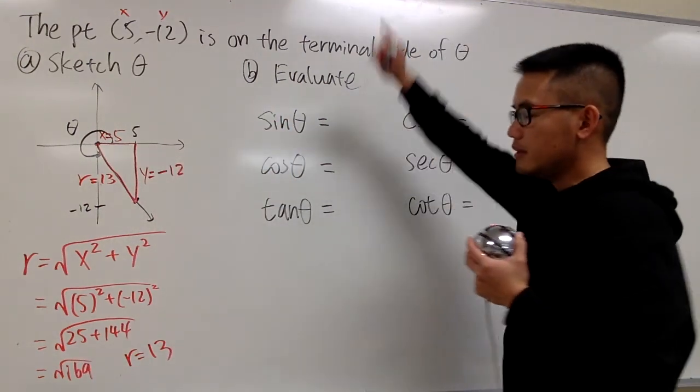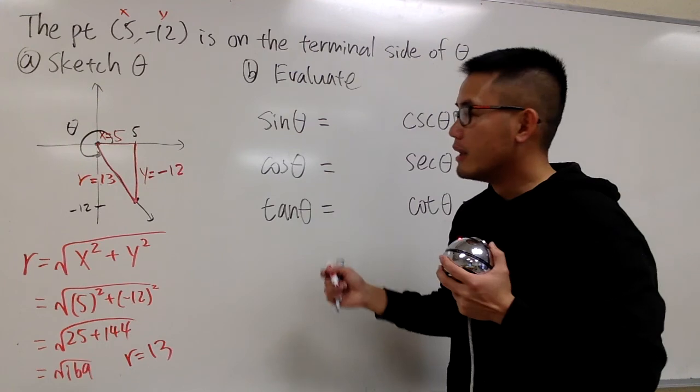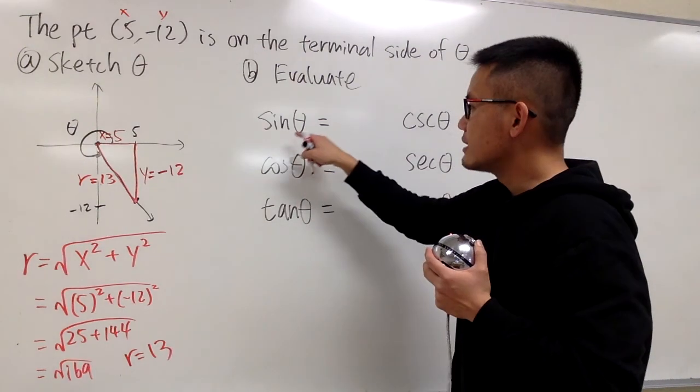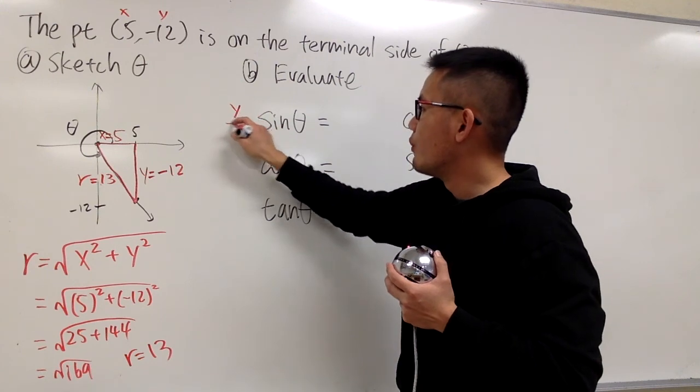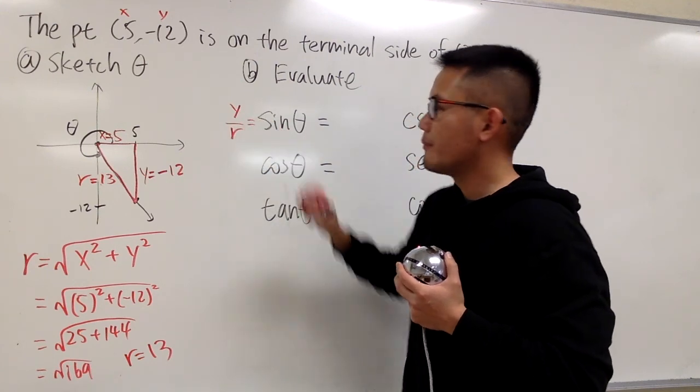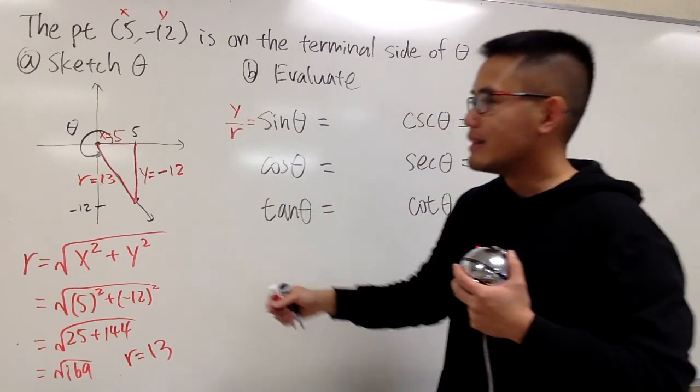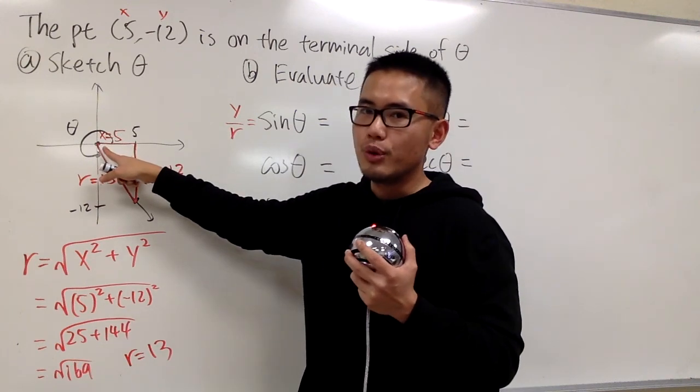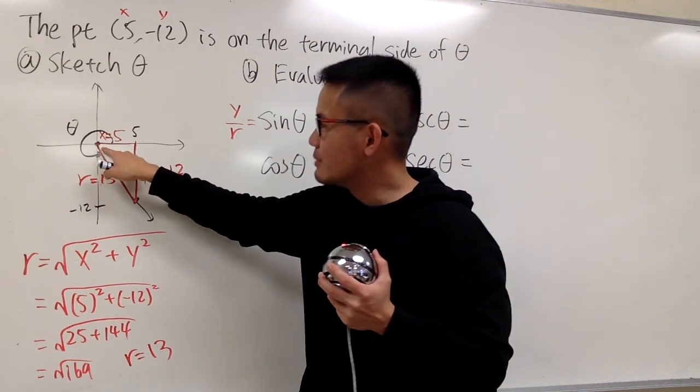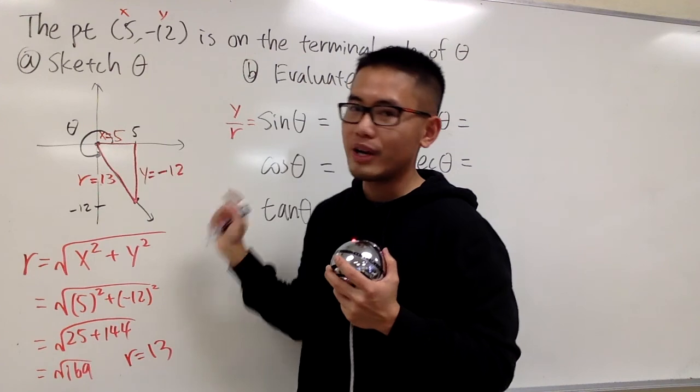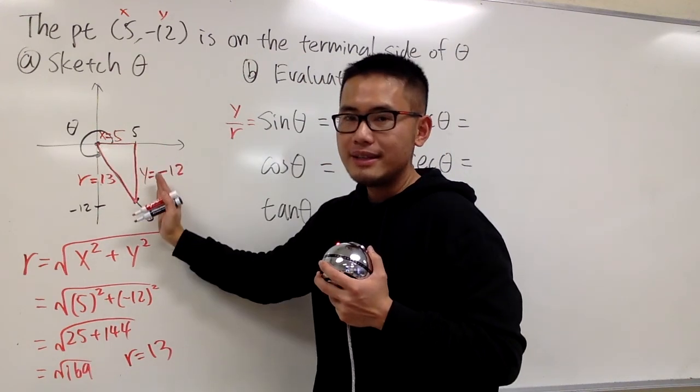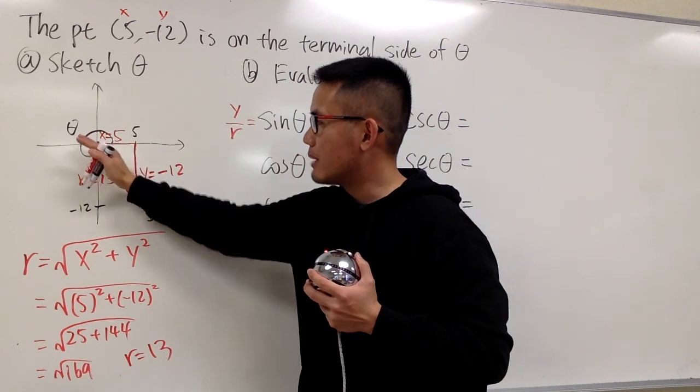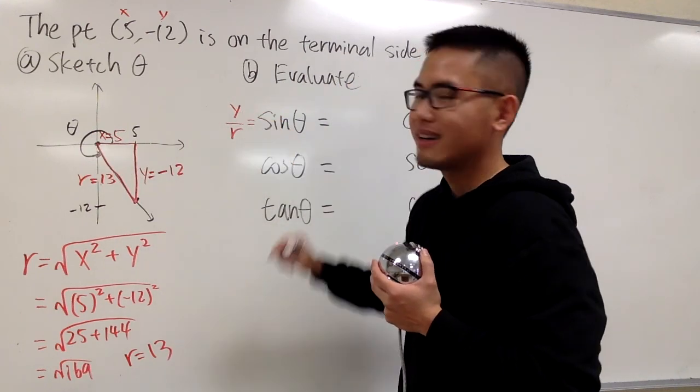Anyways, so these are the things for you to remember. In this situation, sin theta is defined as y over r. Why is this? Technically, if you look at this as your reference angle, because we are talking about right triangle, sin theta is the opposite over the hypotenuse. That's exactly why it is y over r.